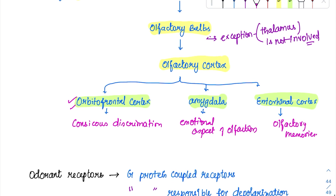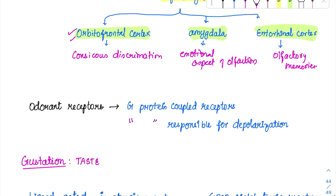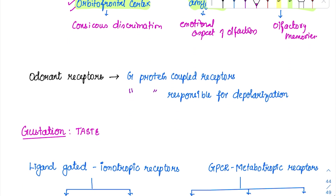Coming to the receptors of olfaction: the olfactory receptors are G-protein coupled receptors. The ion responsible is very important — calcium ions are the ones responsible for olfactory or odorant transmission. So this is all about olfaction.